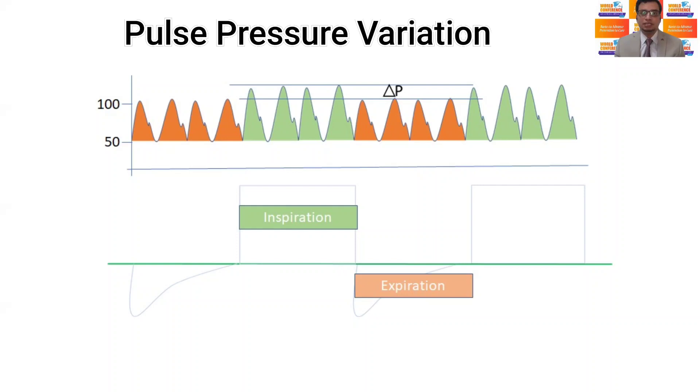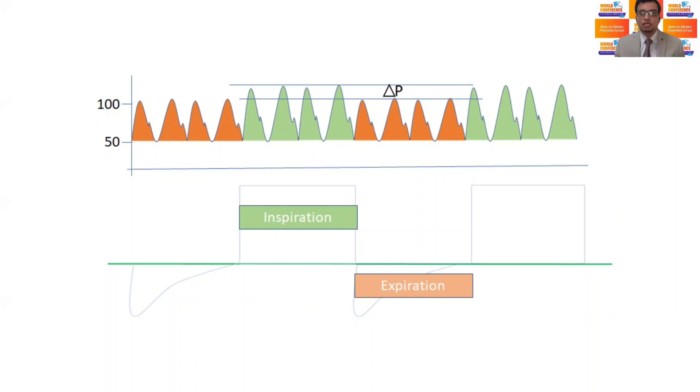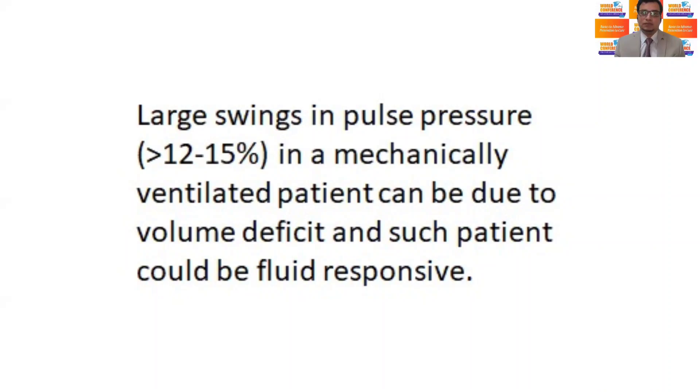The initial increase in the intrathoracic pressure during the inspiration leads to a transient increase in the venous return to the left atrium because of the squeezing effect on the pulmonary capillaries. The effects of intrathoracic pressure on the venous return are amplified in the presence of hypovolemia. Such patients are fluid responsive.